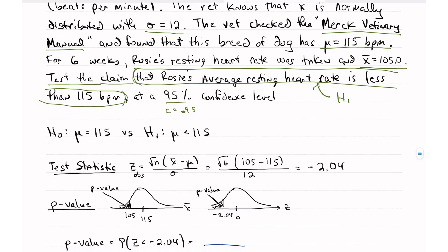The first step is to write out the null hypothesis. H₀: mu equals 115. We're testing against 115 — in this problem they actually state mu equals 115, though sometimes they don't. So mu is 115 beats per minute. The claim says less than, so we put a less than sign for H1, our alternative hypothesis: mu less than 115. Notice that the numerical values in H₀ and H1 are the same.